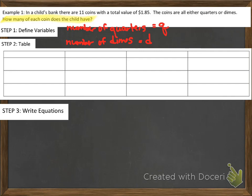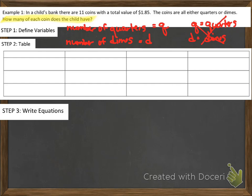Q represents the number of quarters and D represents the number of dimes. It's important to understand that if I just said Q equals quarters and D equals dimes, that is insufficient — that is incorrect. Why? Because I need to describe what attribute I'm looking for. Is Q the monetary value of the quarters or is it the number of quarters? A quarter is worth 25 cents. So you have to be more specific than just saying Q is quarters and D is dimes.